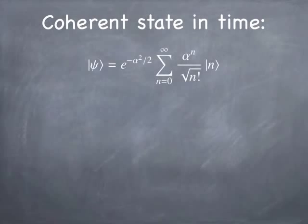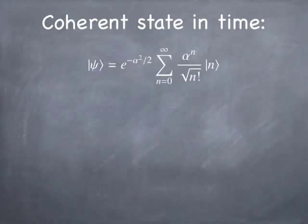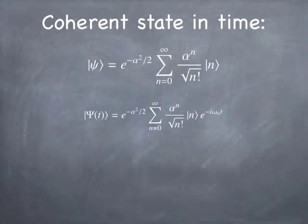Let's look at coherent states and the way they depend on time. We've got our coherent state — the same one we started with before — and now we're going to turn on the time. Just like with any other quantum system, if you've expanded it in terms of energy eigenstates, each energy eigenstate just advances in phase at a rate determined by the energy of that state. In other words, each energy eigenstate gets multiplied by the time-dependent phase factor e to the minus i omega_n t.